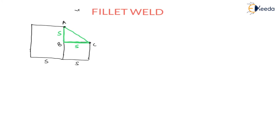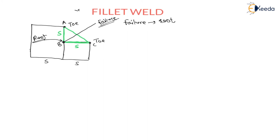At points A and C, these are called the toe. At point B, this point is called the root. Failure always starts from the root. The failure line goes from the root and meets line AC of the triangle at point D. The distance B to D is considered as T1. Note that A to B equals B to C — it is an isosceles triangle.